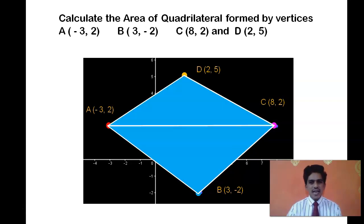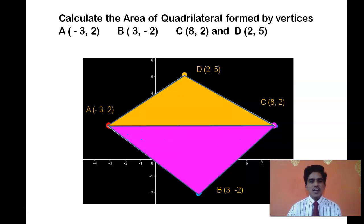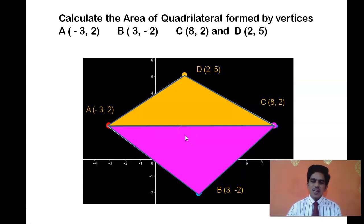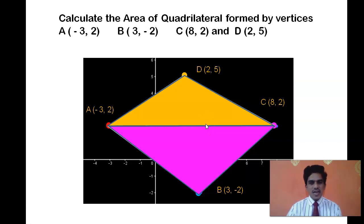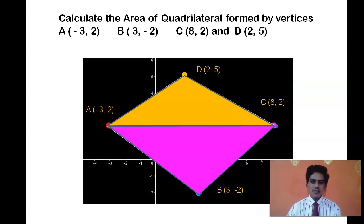When you draw a diagonal in a quadrilateral, it is divided into two triangles. We can apply the area of a triangle formula to calculate the area of each triangle — one in pink and the other in yellow. We calculate the area of triangle ABC and then the area of triangle ADC using the same formula. Then we add the two areas to get the area of the quadrilateral.